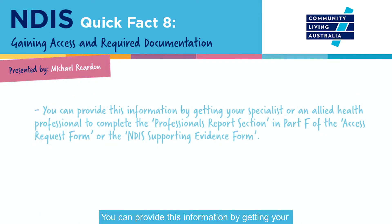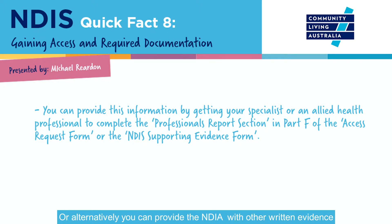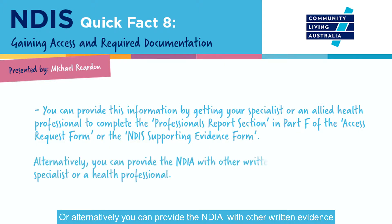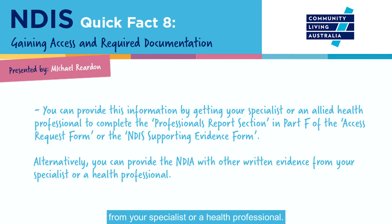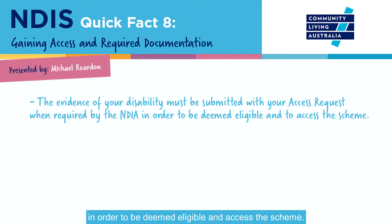You can provide this information by getting your specialist or an allied health professional to complete the professionals report section in Part F of the access request form or the NDIS supporting evidence form, or alternatively you can provide the NDIA with other written evidence from your specialist or a health professional. The evidence about your disability must be submitted with your access request when required by the NDIA in order to be deemed eligible and access the scheme.